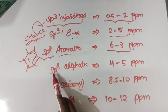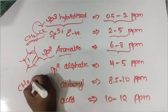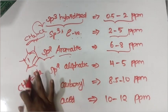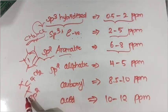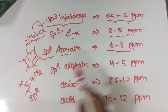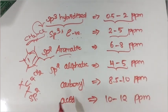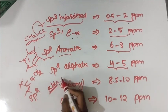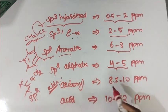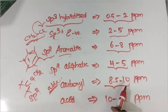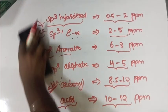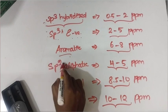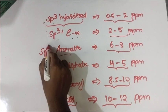For SP2 hybridized protons in aliphatic compounds, such as in ethylene where there is a double bond and 3 sigma bonds, the value is around 4 to 5 ppm. For carbonyl compounds — specifically aldehydes — the value is between 8.5 to 10 ppm. If you have an acid group in your compound, the value is between 10 to 12 ppm. These are the chemical shift values you should keep in mind — they will be really helpful when you solve problems.